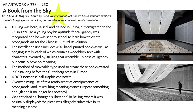He created these works using movable type — a method that existed in China long before the Gutenberg press in Europe. Interestingly, all 4,000 characters used to create this work are nonsense. To a Western audience they look Chinese, but they don't actually translate to anything meaningful. Again, we have the sense of the omnipresence of something that lacks meaning.